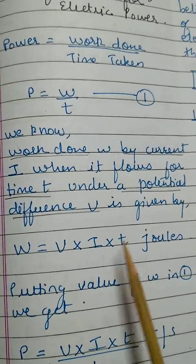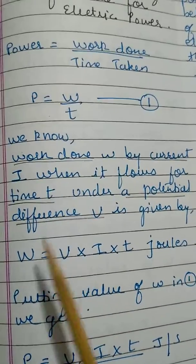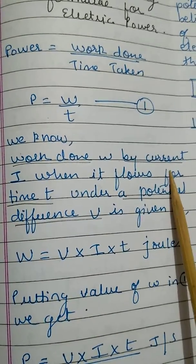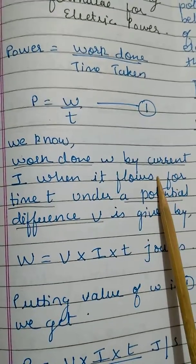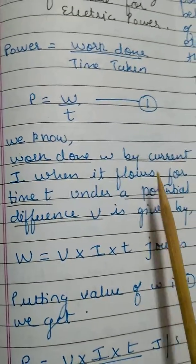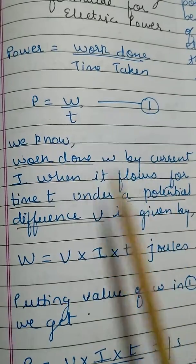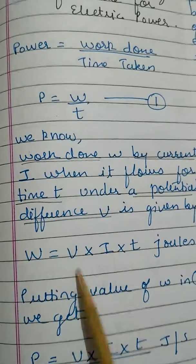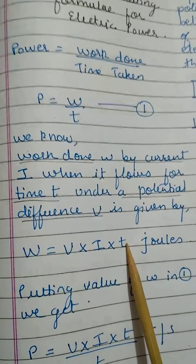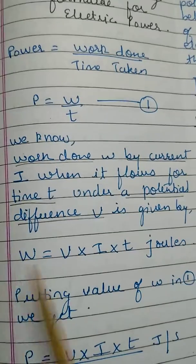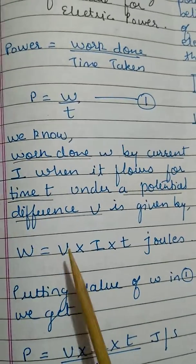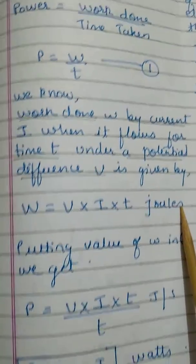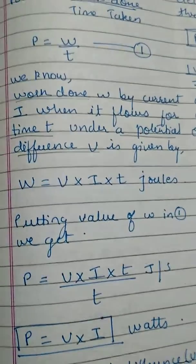Work done is given by W equals V into I into T. What does this mean? Work done in this context means the glowing of a bulb or the working of a fan. The work will be done when the current flows under the potential difference V for a particular time period, so W equals V×I×T, and the unit of work done is joules.